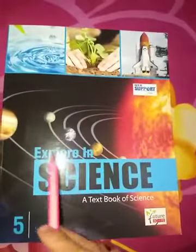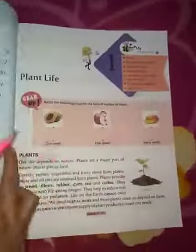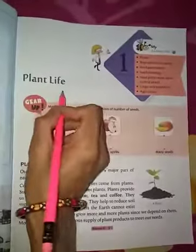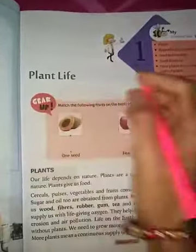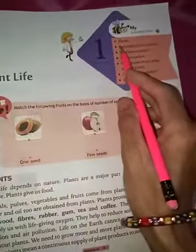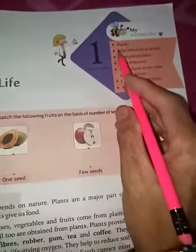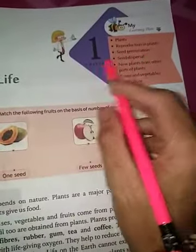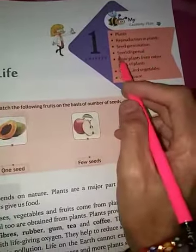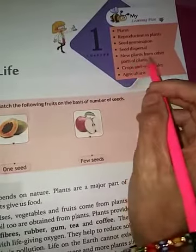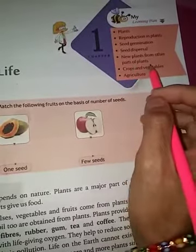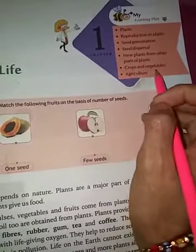Hello students, today I'm going to teach you science for class fifth. Let's start with chapter number one — Plant Life, yaane ki paudhon ka jeevan. In this chapter we will study: plants, reproduction in plants, seed germination, seed dispersal, new plants from other parts of a plant, crops and vegetables.